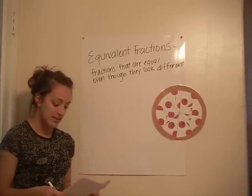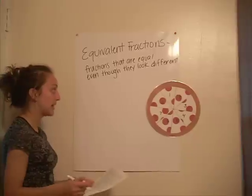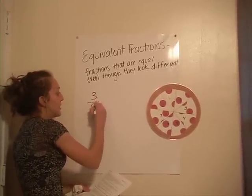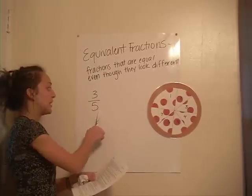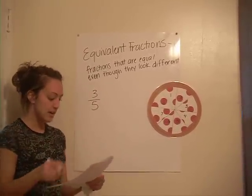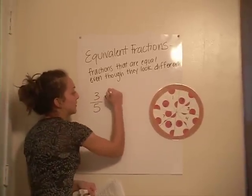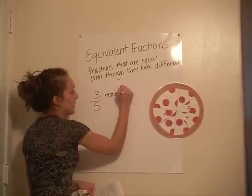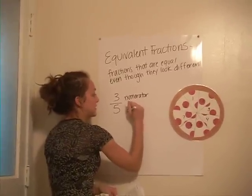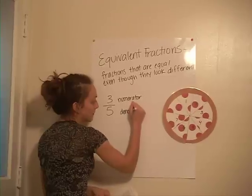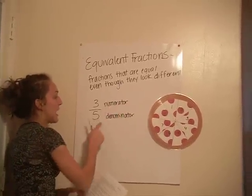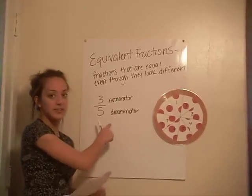A fraction is made up of two main parts, which are separated by a line. An example would be 3 over 6 — this is part of the main amount. This top part is called the numerator, and this is reviewed from last week. And this bottom number is the denominator. The numerator is taken out of the denominator, which is the whole amount.